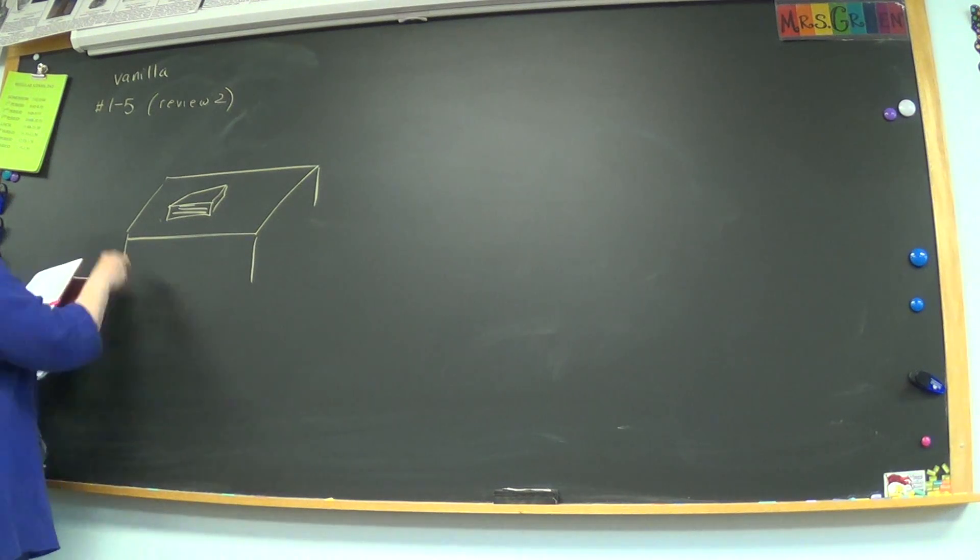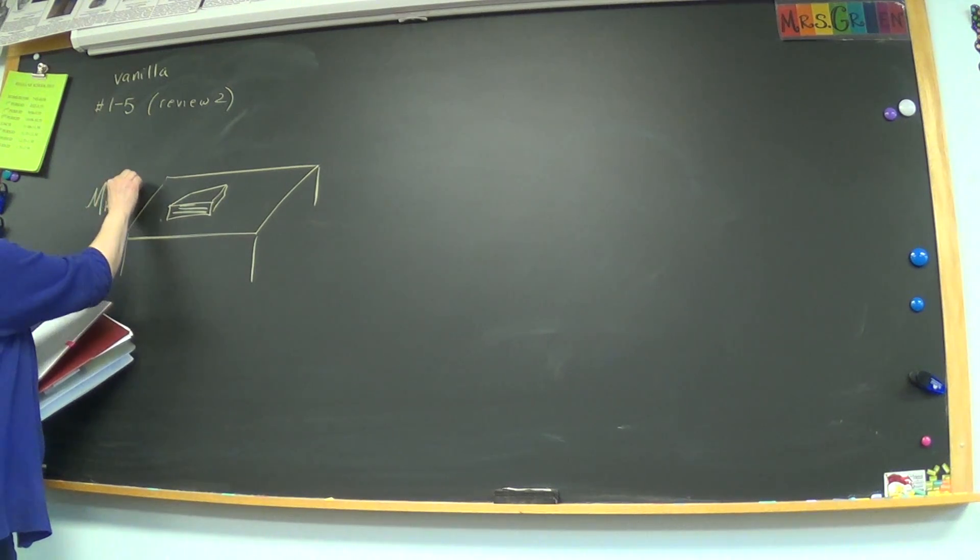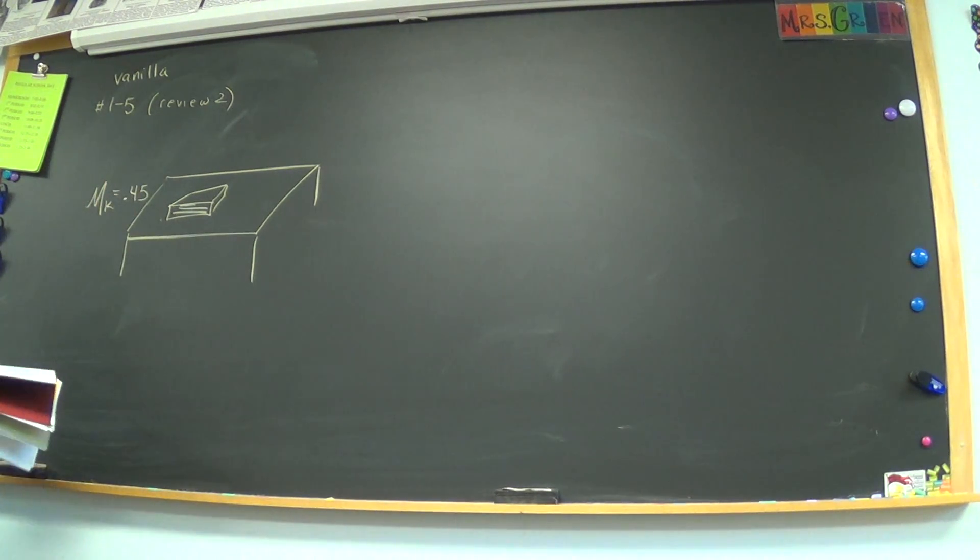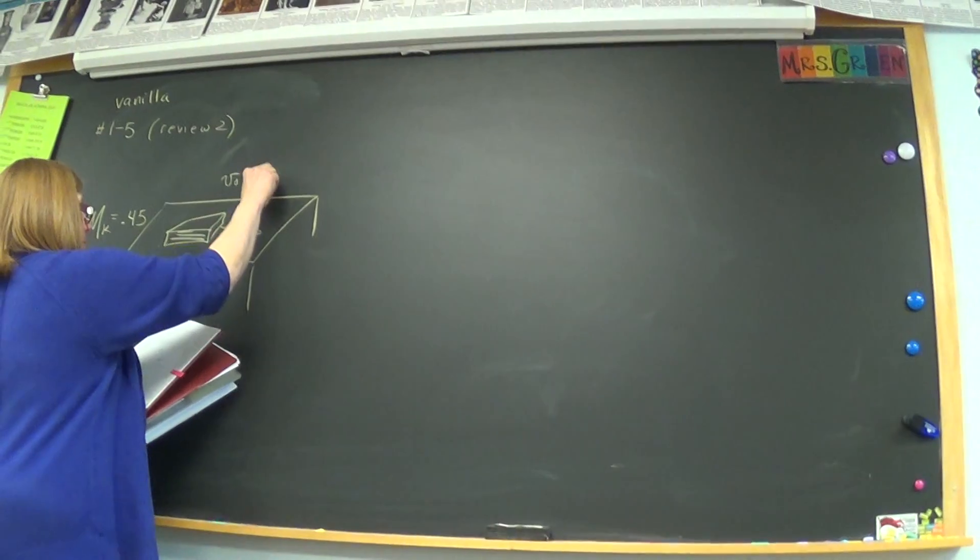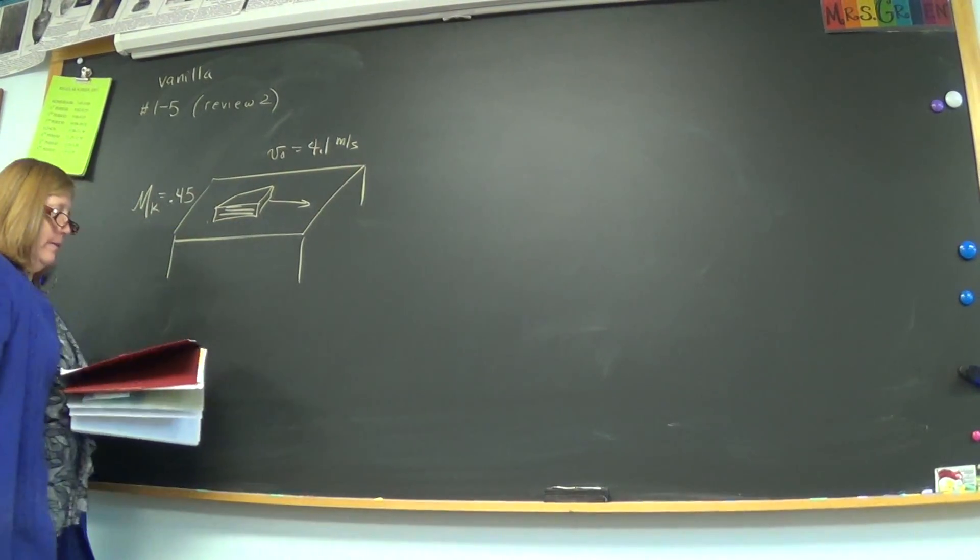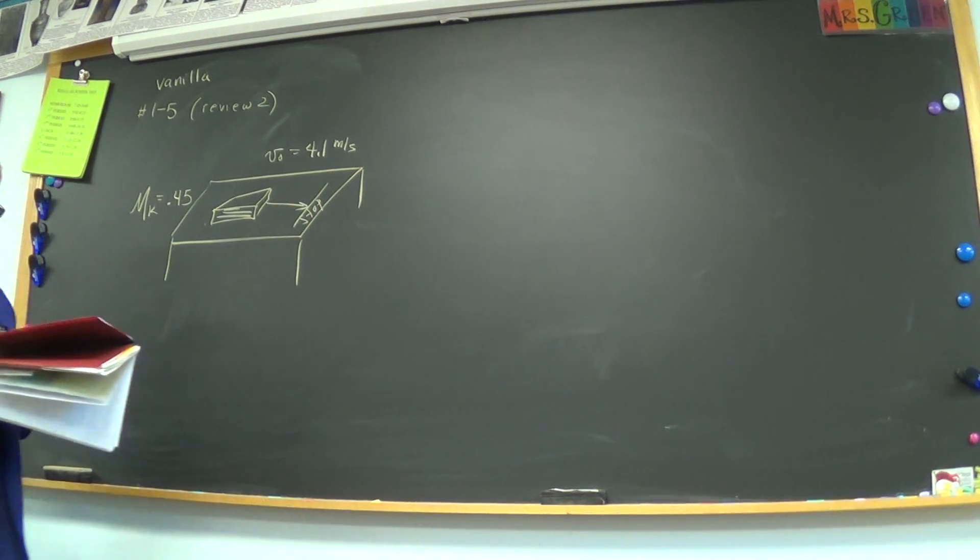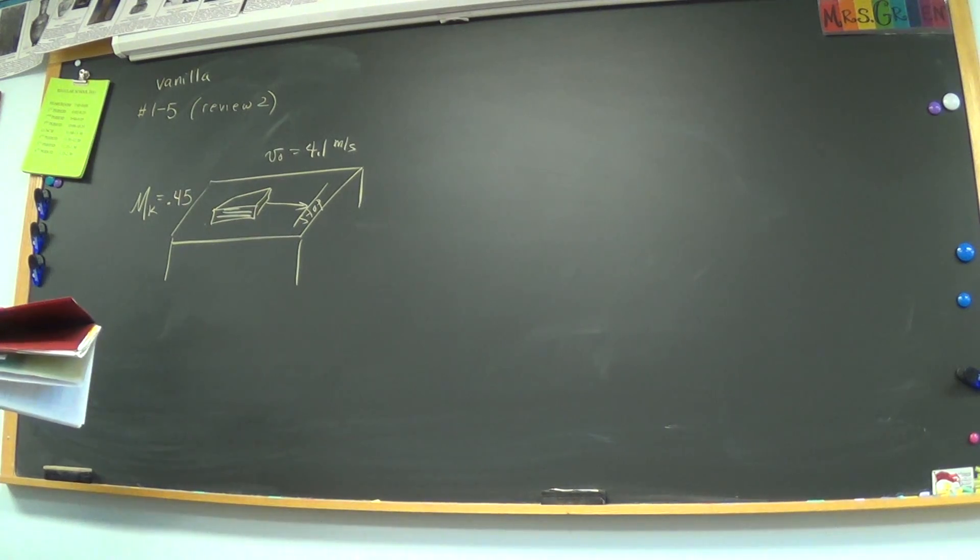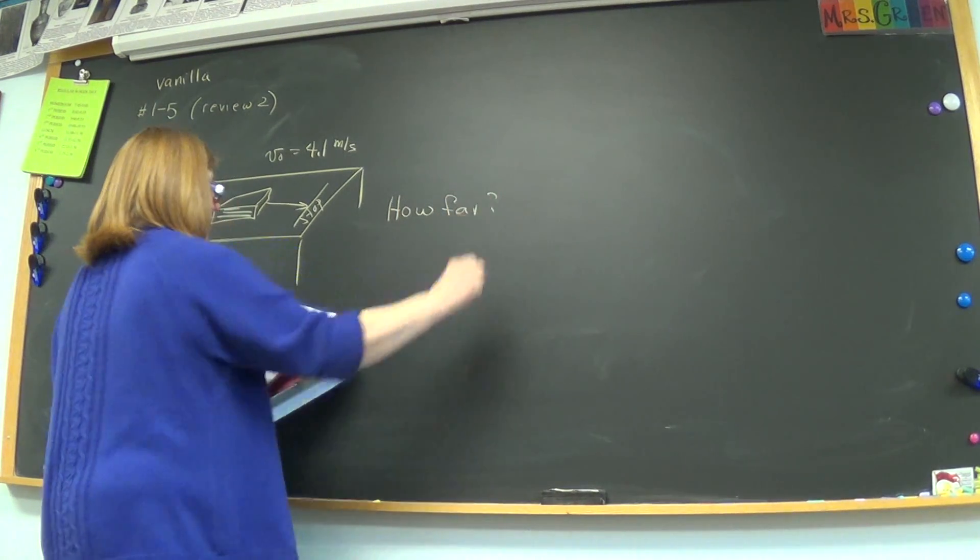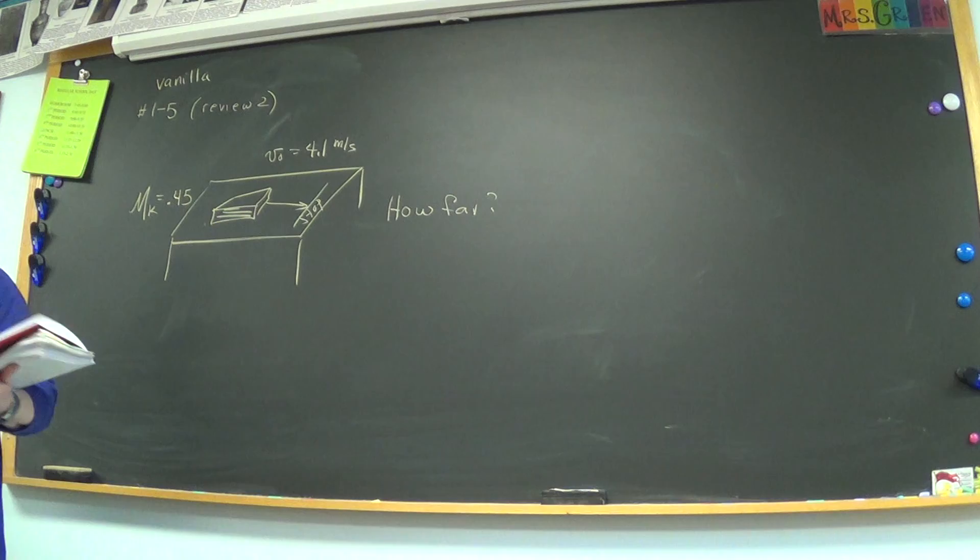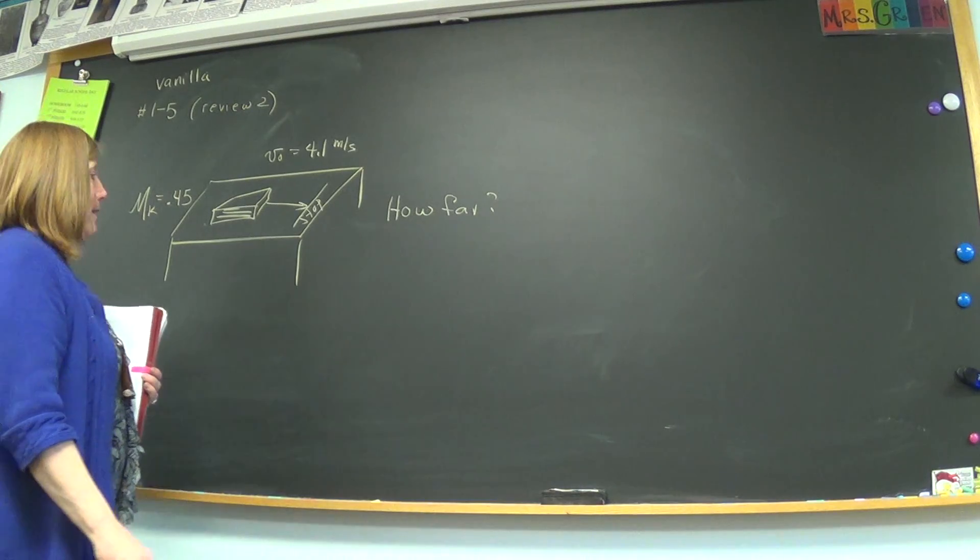Now we have the mk, the coefficient of kinetic friction between the book on the table when it's moving is 0.45. The velocity that it creates when it is first pushed is 4.1 meters per second and it'll go across the table until it comes to a stop. It will stop on the table and the question is, I'm sure, the burning question is, how far will it go? So that's the kind we were doing Friday before we had this weekend. So I'm just going to teach it, re-teach it, so you know how to start.